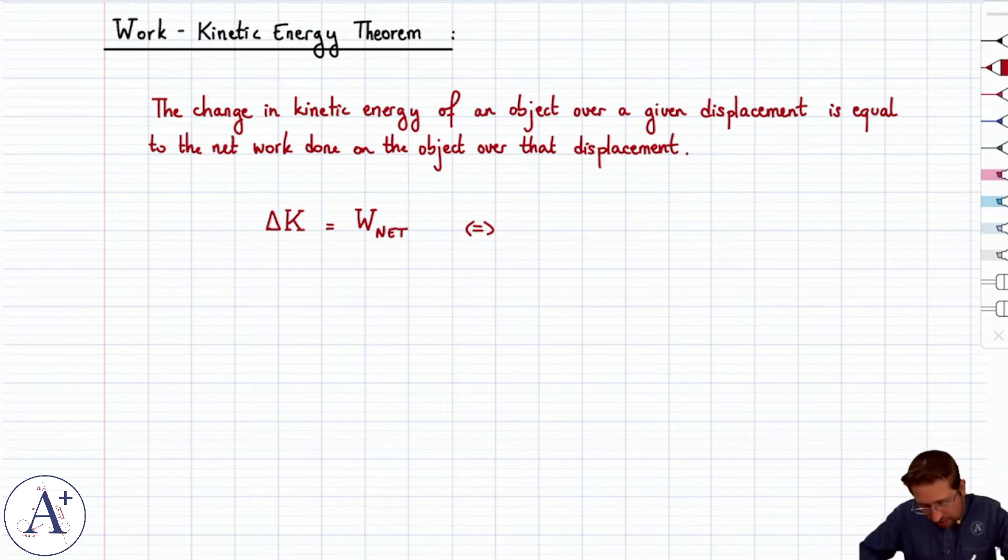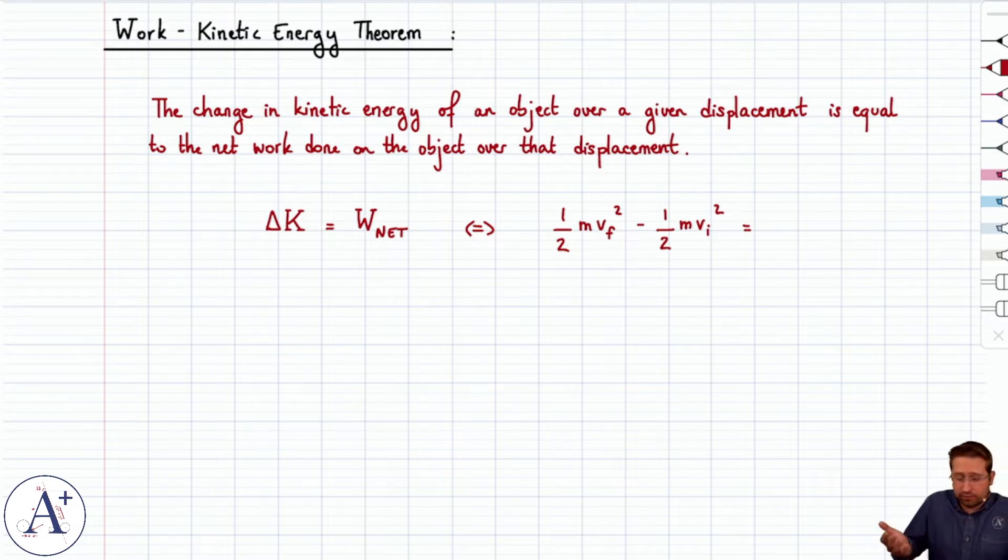Technically, we could just go ahead and write delta k as one-half mv final squared minus one-half mv initial squared, because we don't really know any better. The only kinetic energy we know is one-half mv squared, but that won't be true when we introduce rotational kinetic energy, and we'll have to be careful whether we have one or the other or perhaps both.